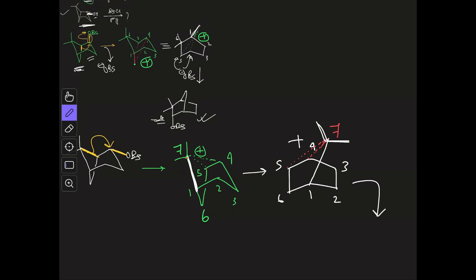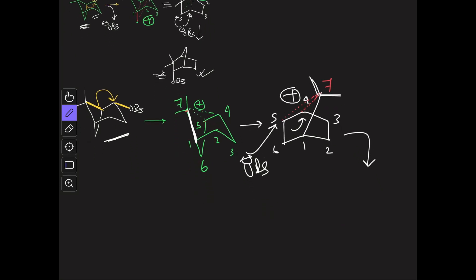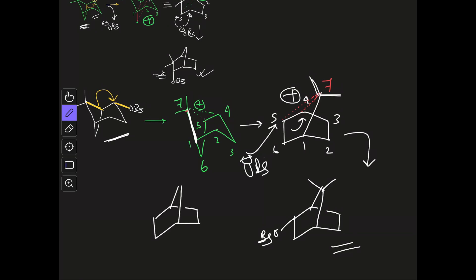On this bridging carbocation intermediate, the OBs can attack either from position 5 or from position 4. Attack on position 4 gives back the same starting material, but attack on position 5 gives a new product with the OBs group there. In the option given in the thumbnail or community tab, option D was listed as the correct answer — with the OBs placed on a specific carbon.